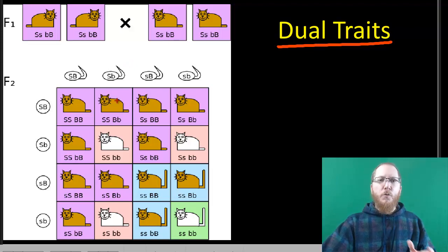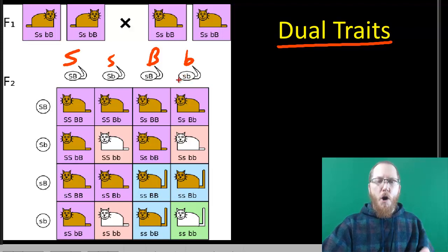What a lot of people want to do, which gets them in trouble, is they want to just say, well, big S, little s, big B, little b, just like we did in the last one. But that's wrong. You have to pass on one S and one B.